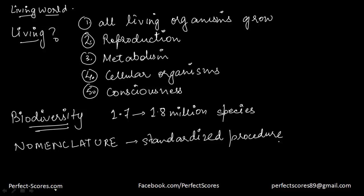Nomenclature is possible only when we are able to identify an organism, and that process is simply called identification. Let's suppose you see a bird and you try to look up its nomenclature — is that bird known or not? If it is already documented, you'll get a scientific name for it. But if that bird is being seen for the first time, you will have to undergo the process of nomenclature so a standardized name can be given to it.